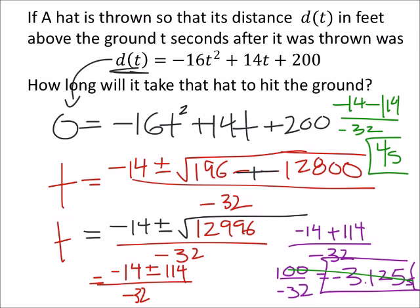4 seconds kind of makes sense, I think, because it's not negative. So you throw your hat in the air, based on this equation, 4 seconds after you threw it in the air, it would hit the ground.